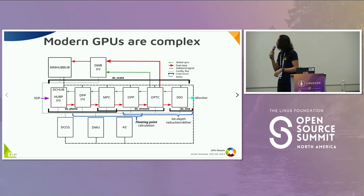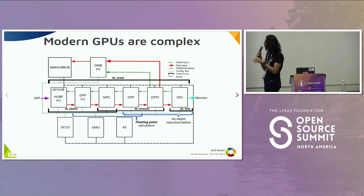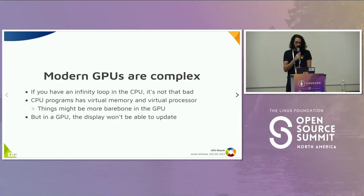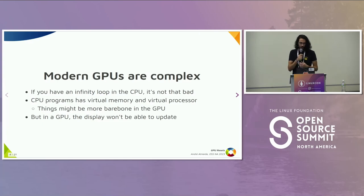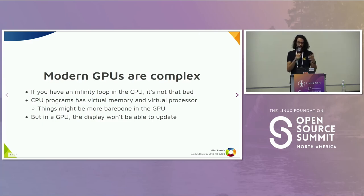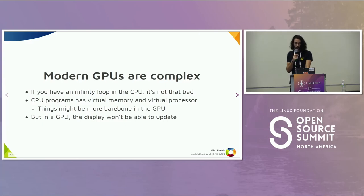For instance, this is the flow for the display unit of an AMD GPU, and you can see there are a lot of components here just for the display part. If you have an infinite loop in a normal CPU program, that's not so bad because we have abstractions on the processor and memory — you can just kill the app. But if this happens on the GPU, that infinite loop can hang the display engine and you won't be able to update the display again. So you really need to kill the process and reset the GPU.